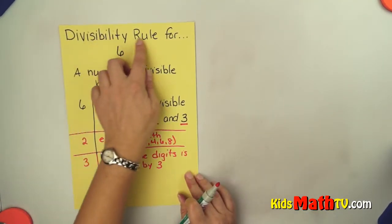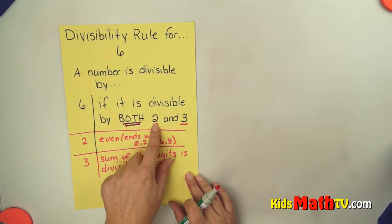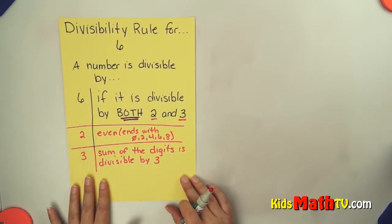In this lesson you will learn the divisibility rule for 6. A number is divisible by 6 if it's divisible by both 2 and 3. So we have to use both rules.